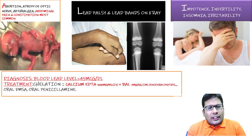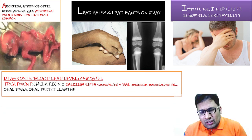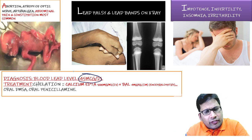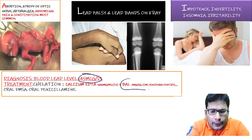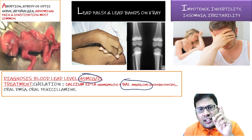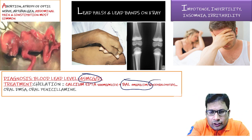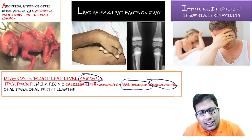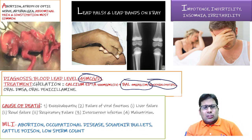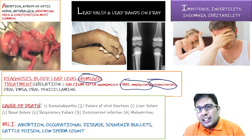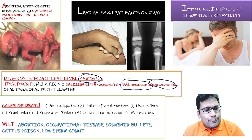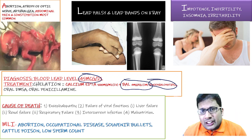Diagnosis: blood lead level. When more than 45, start treatment. Drugs used: calcium EDTA 100 mg per m² intravenously; BAL 4 mg/kg body weight intramuscularly (BAL is contraindicated intravenously because it causes fat embolism — given in encephalopathy); oral DMSA; oral penicillamine. Cause of death: multi-organ failure — encephalopathy, liver failure, renal failure, respiratory failure. Medical-legal importance: it is an occupational/factory disease, souvenir bullet can lead to lead poisoning, cattle poison, low sperm count, and infertility.